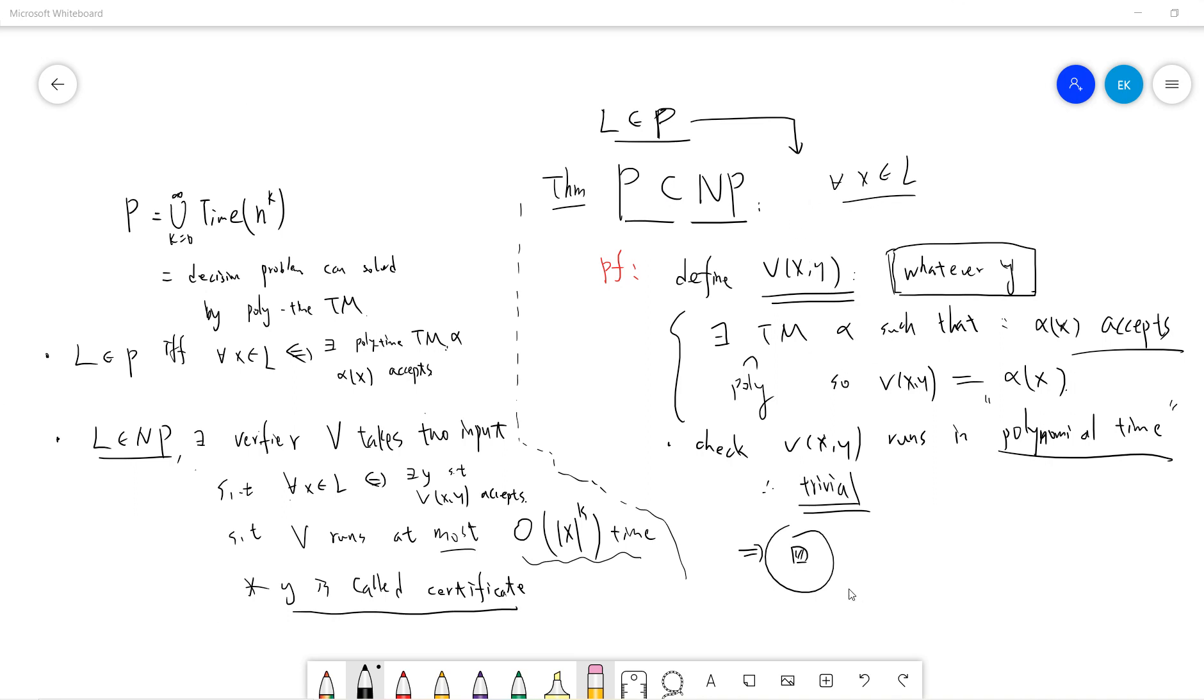So, you just let the verifier to be your, to be the P turning machine, so you can, at the polynomial time, that the turning machine can easily check whether this is answer or not. So, v of x runs in polynomial time, which is trivial, so done.